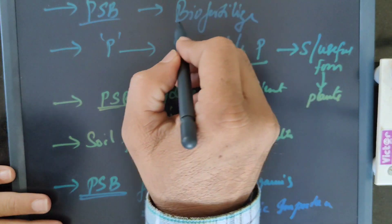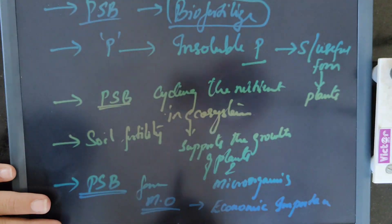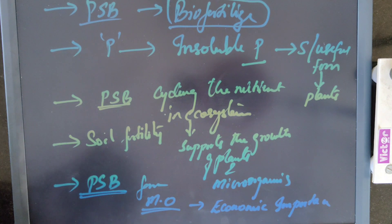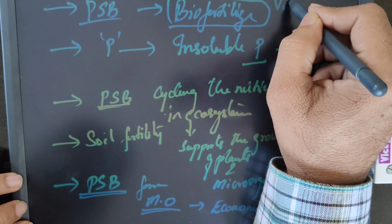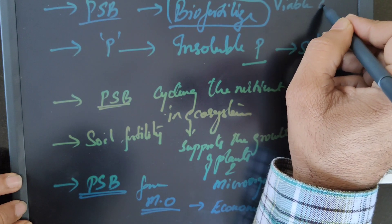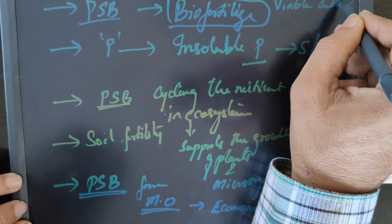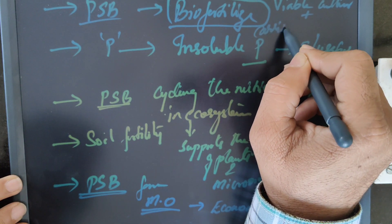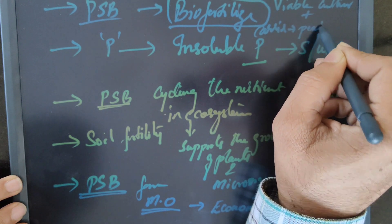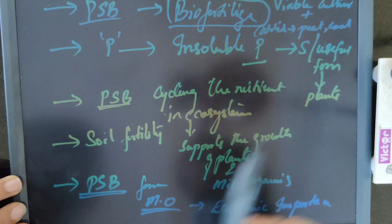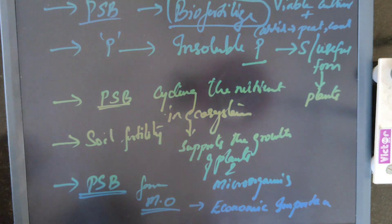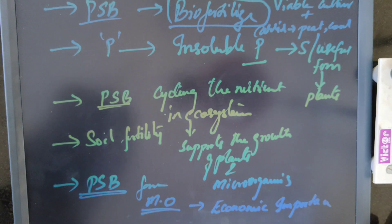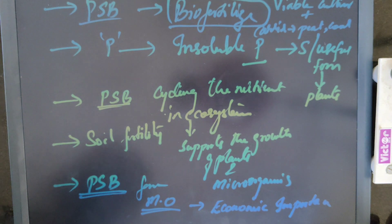So these were some of the benefits of phosphate solubilizing bacteria. The biofertilizers available in the market containing phosphate solubilizing bacteria contain a live, viable form of culture which is mixed with carrier molecules such as cocopeat, coal ash, etc. So this is the overview of phosphate solubilizing bacteria and its importance. See you in my next class with much more information on agriculture-related microorganisms.